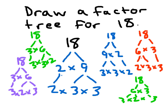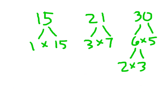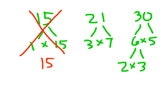Let's play: is it a proper factor tree? Take a look at this first one. Hopefully you said no — it is not a proper factor tree. We would never bring 1 down in the factor tree, and 15 is not prime. A proper factor tree for 15 would look like this: just 5 times 3. Both 5 and 3 are prime, so we are done.